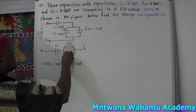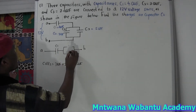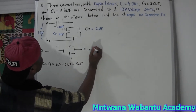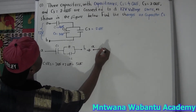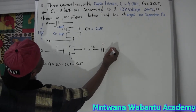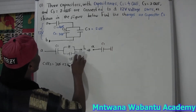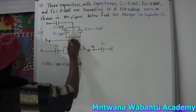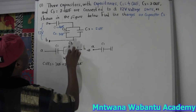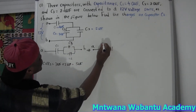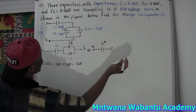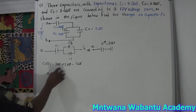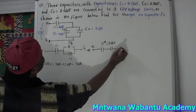In the simplified diagram, we have point A, then C1, followed by the combined C2 and C3 — let's call this C-star. C-star equals 5 microfarad. Then we reach point B. So now we have C1 in series with C-star.